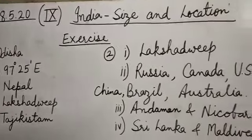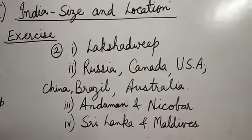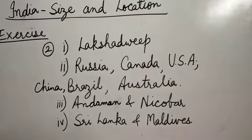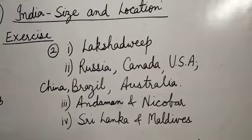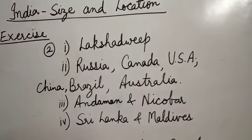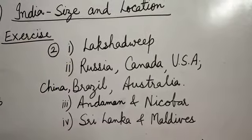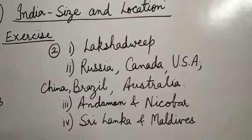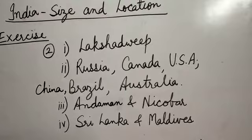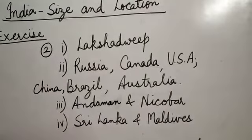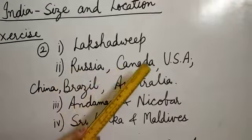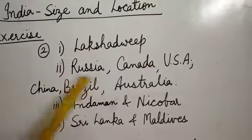Now question number two: answer the following questions briefly. I have written only the answers here. The first question: Name the group of islands lying in the Arabian Sea — the answer is Lakshadweep. Number two: Name the countries which are larger than India. India is the seventh largest country in the world, so there are six countries larger than India: Russia, Canada, USA, China, Brazil, and Australia.